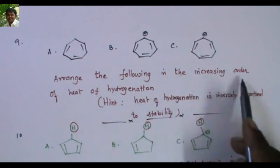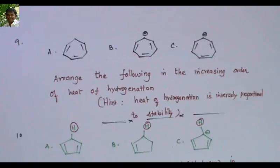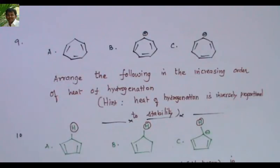Arrange the following in the increasing order of their heat of hydrogenation. Heat of hydrogenation is the heat released during hydrogenation. A hint is provided: heat of hydrogenation is inversely proportional to stability. You may know which compound is more stable based on aromaticity, and then take the inverse to determine the order.